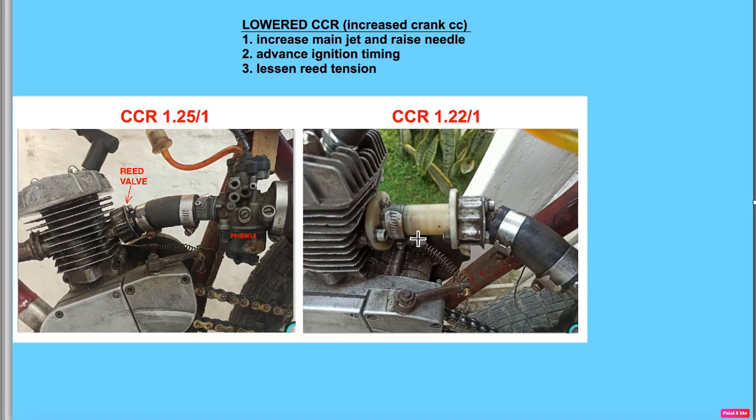So this is the test I did. I made the extension between the engine and the reed valve, which decreased the crankcase compression ratio from 1.25 to 1.22. And I calculated that reduced the initial vacuum going to the reed valve by 12%.